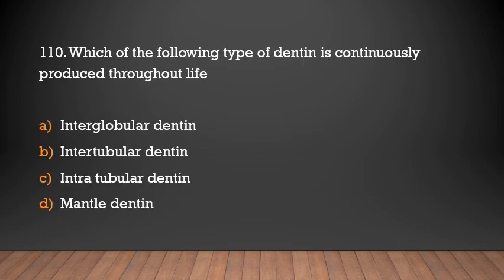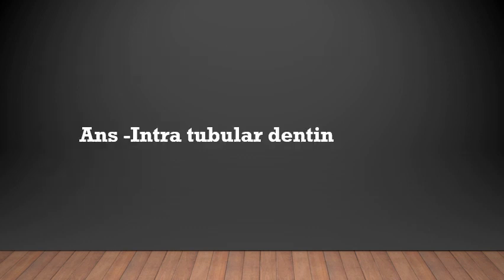Which of the following types of dentin is continuously produced throughout life? Options: interglobular dentin, intertubular dentin, intratubular dentin, mantle dentin. Answer: Intratubular dentin.